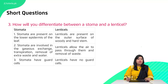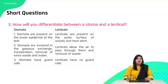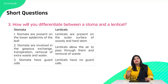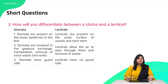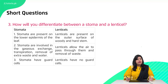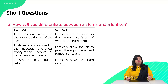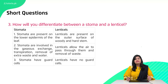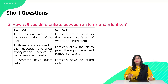The next question is: how will you differentiate between a stoma and a lenticel? A stoma is basically the opening, and stomata is the structure. For this answer, we divide the screen into two parts — stomata on one side and lenticels on the other. Stomata are present on the lower epidermis of leaves, while lenticels are present on the outer surface of woody and hard stems.